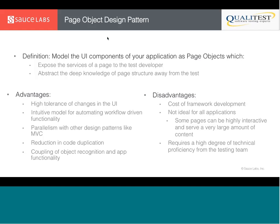Neil taking over: Brian was going over the advantages of Page Object. There's reduction in code duplication — when the markup changes or some part of the web or mobile app changes, if you've implemented the Page Object pattern correctly, there's only one place to change that selector or interaction. Another advantage is coupling of object recognition and app functionality, allowing you to move fast and know what each page looks like.